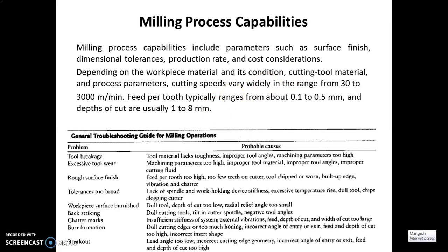Now we'll discuss process capabilities. These include process parameters such as surface finish, dimensional tolerances, production rates, and cost considerations. We have to consider all these parameters during milling operations. Depending on conditions, materials, cutting tool material, and parameters, cutting speed may vary from 30 to 3000 meters per minute. Feed per tooth typically ranges from 0.1 to 0.5 mm, and depth of cut is usually 1 to 8 mm.